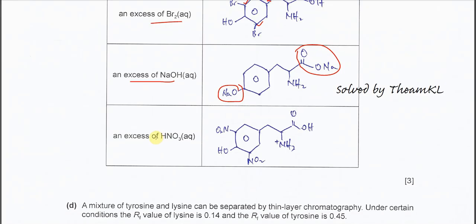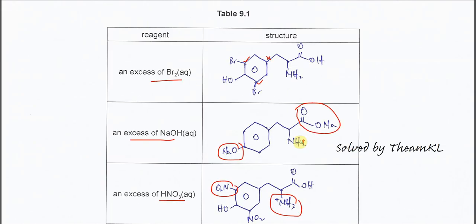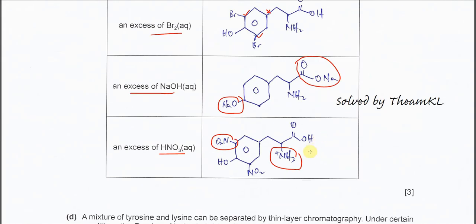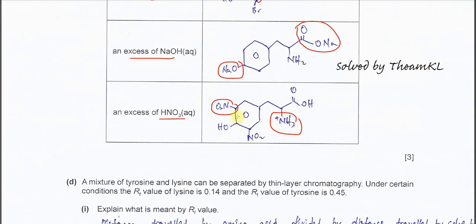The second reagent is excess sodium hydroxide. Sodium hydroxide is alkaline and reacts with the carboxylic acid and the phenol: the carboxylic acid forms a carboxylate (COO⁻) salt and the phenol forms a phenoxide (O⁻). So you get the sodium carboxylate salt and sodium phenoxide. The third reagent is dilute nitric acid, which causes nitration at positions 2 and 6. One or two nitro groups can be placed at those carbons. Note: the amine group reacts with the acid to form an ammonium salt.